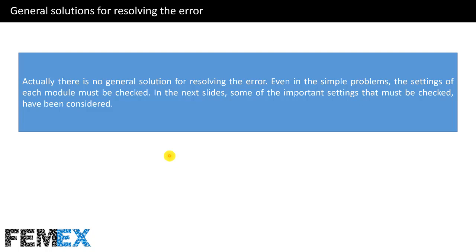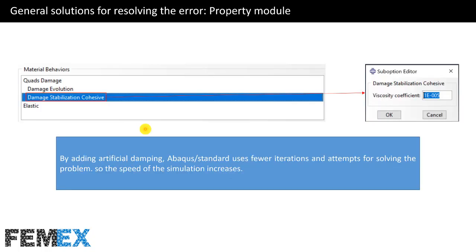There is no single general solution for resolving this error; even in simple problems, the settings of each module must be checked. In the property module, if you have defined damage for traction separation laws like quad damage, you must define damage stabilization cohesive. This introduces artificial damping, so Abaqus standard uses fewer iterations and attempts, increasing simulation speed. The best value for the viscosity coefficient is 1×10⁻⁵; increasing it will decrease simulation accuracy.